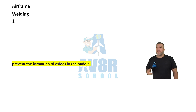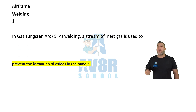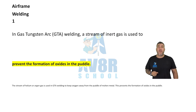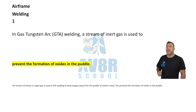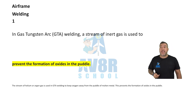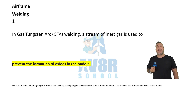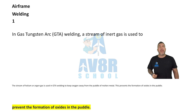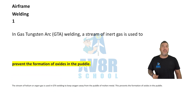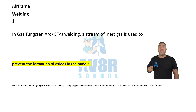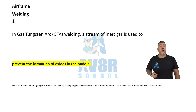Question number one: In gas tungsten arc (GTA) welding, a stream of inert gas is used to prevent the formation of oxides in the puddle.